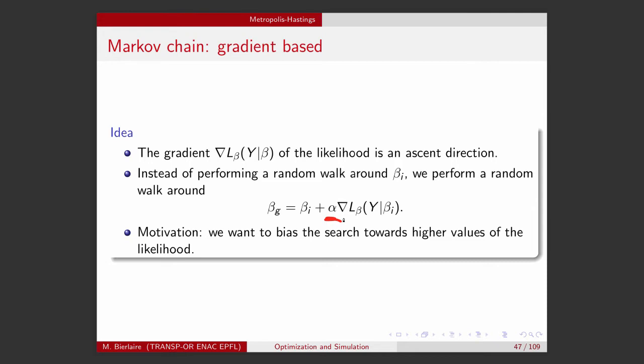But if alpha is too long, it may not happen. So the idea here, in the context of metropolisizing algorithm, is to bias the search towards higher value of the likelihood.